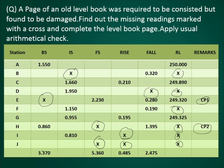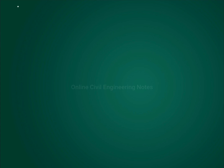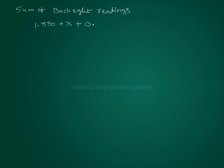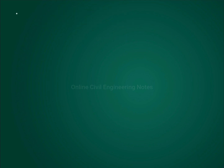By observing the table, the sum of back sights is equal to 3.370. So 1.550 plus x plus 0.860 equals 3.370, from which we can find the back sight at E. Therefore, back sight at E is equal to 3.370 minus 1.550 minus 0.860, which gives x equal to 0.960 meters.